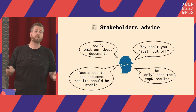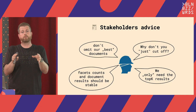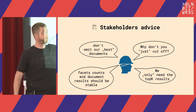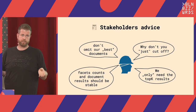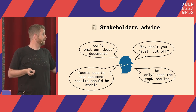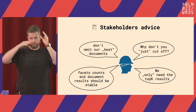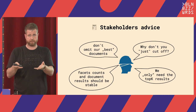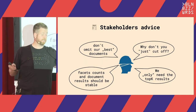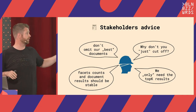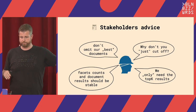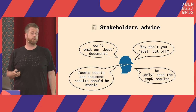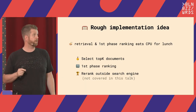As for stakeholders involved: the first comment was just leave the best documents and best products on top, whatever you do. Another said nobody browses beyond page 10, just cut off. Another said you can cut off anything in the document list, but the facets need to represent the whole result, not just the top results. And yet another said just the top results — I don't care about the facets, I just care about response time. So a lot of ideas, a lot of advice, and we came up with a rough implementation idea.